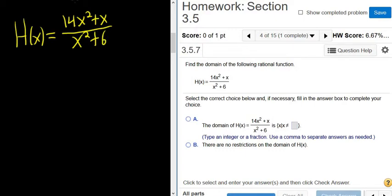So for rational functions, the domain is everything that you can plug in, and you can plug in anything except those numbers that make the bottom 0.